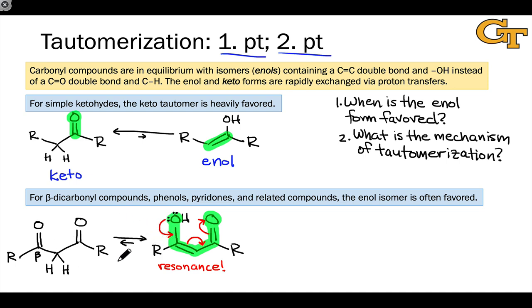It may not be favored over the keto form, but it's certainly more stable than a plain vanilla enol for a simple ketone or aldehyde. Phenols are another classic example, and I'm actually going to start by drawing out a structure that we've seen before, a benzene ring substituted with a hydroxyl group.